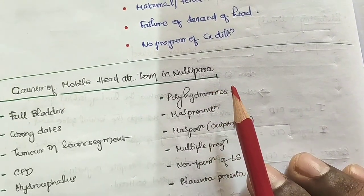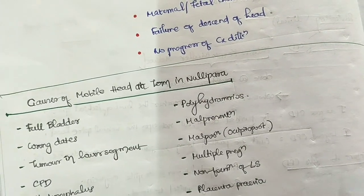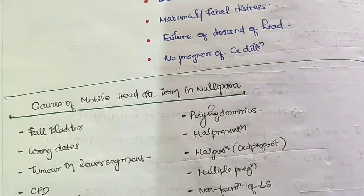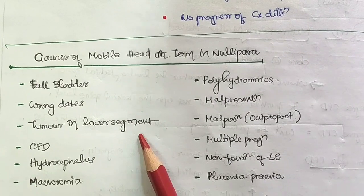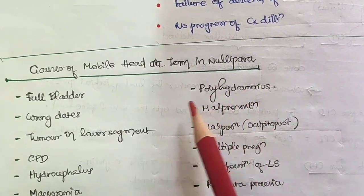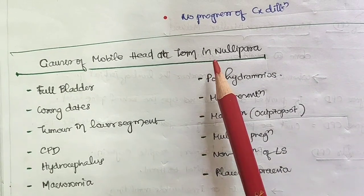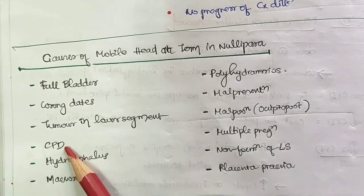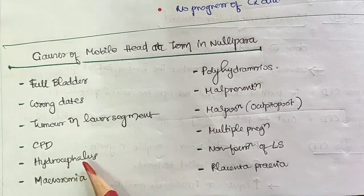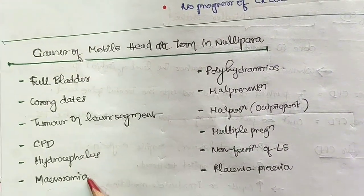Other causes of mobile head at term include: incorrect dating leading to prematurity, a tumor or lesion in the lower segment of the uterus, hydrocephalus of the fetal head, and macrosomia — a very large baby.